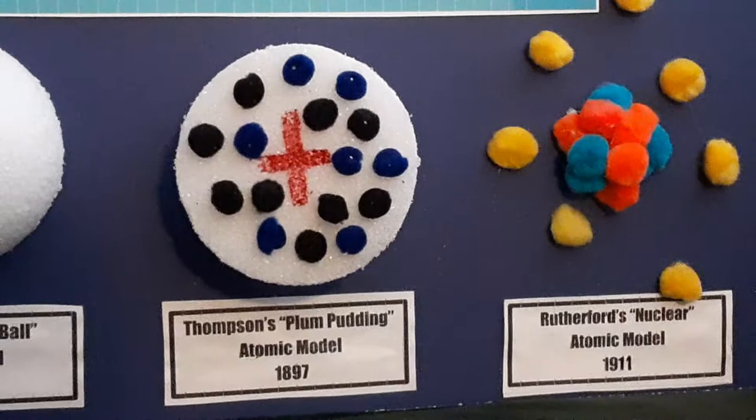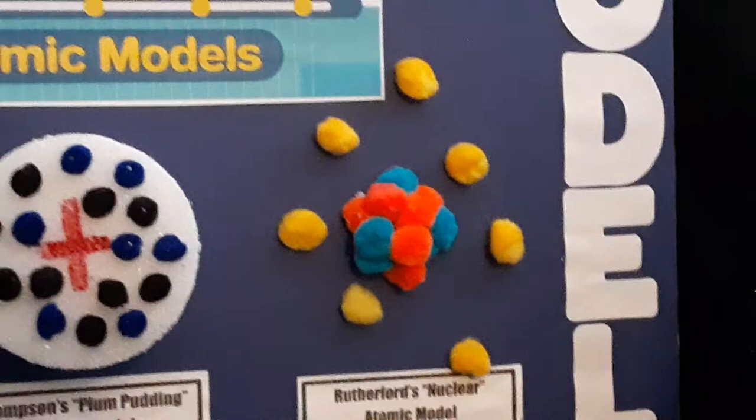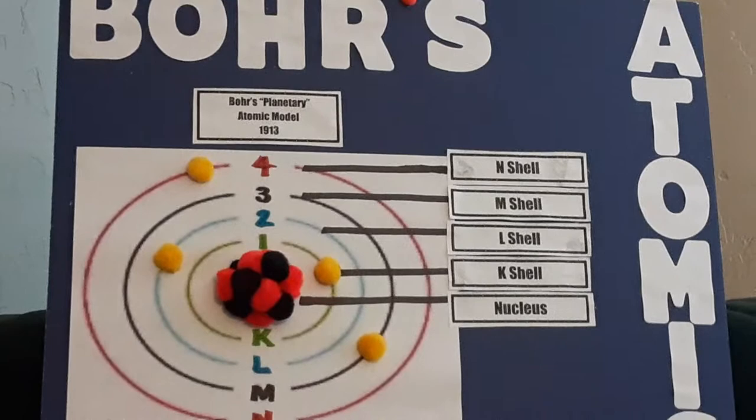Next was Rutherford's atomic model, developed in 1911. This was called the nuclear model because he was the first to think of an atom having a nucleus in the middle. Then in 1913 came Niels Bohr's atomic model, which by some people is known as either the planetary model or the Rutherford-Bohr model.